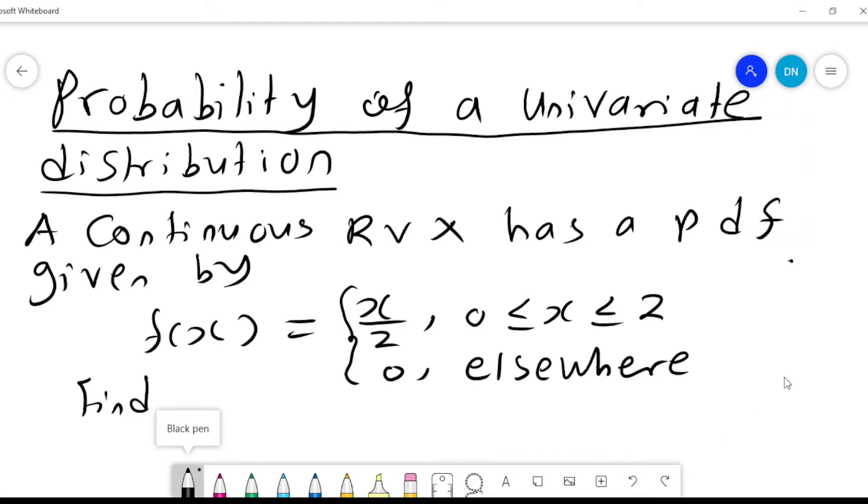Probability of a univariate distribution. A continuous random variable X has a PDF given by f(x) equals x over 2, and x lies between 0 and 2.